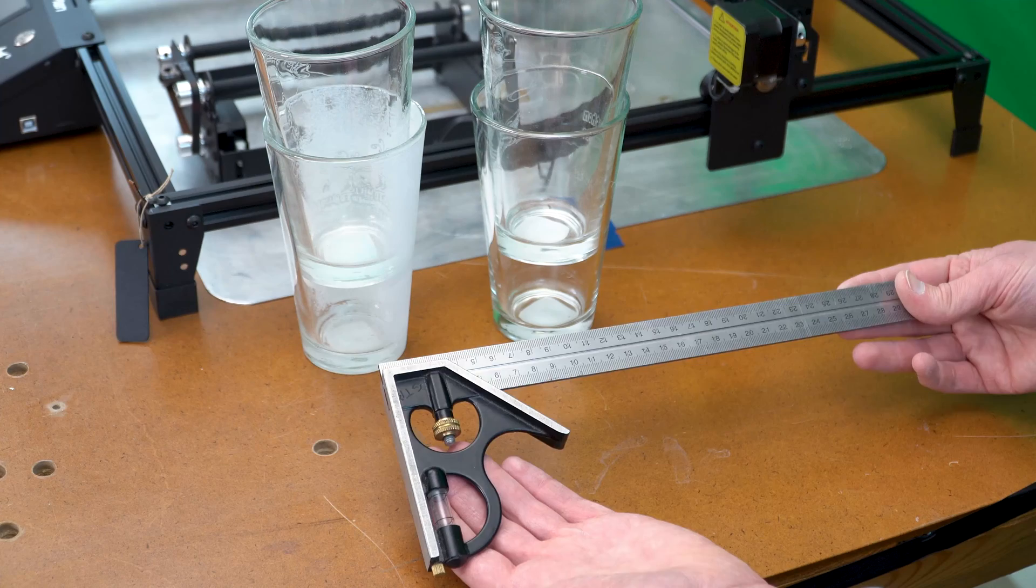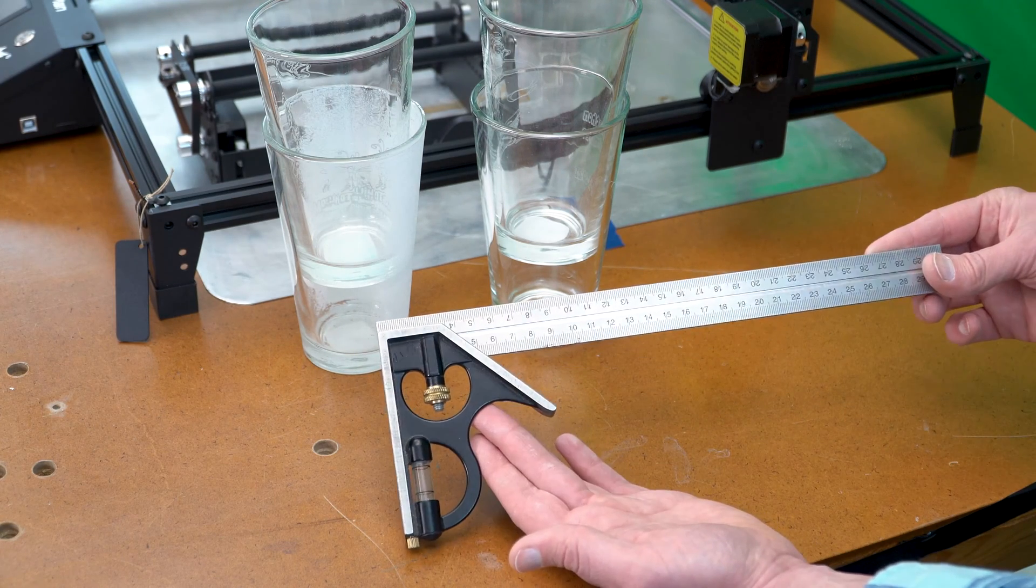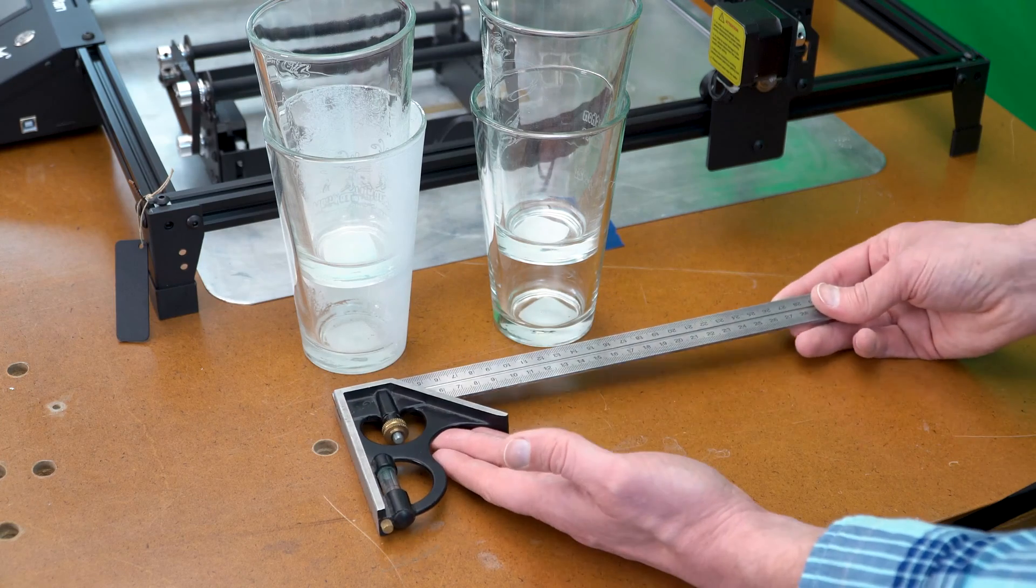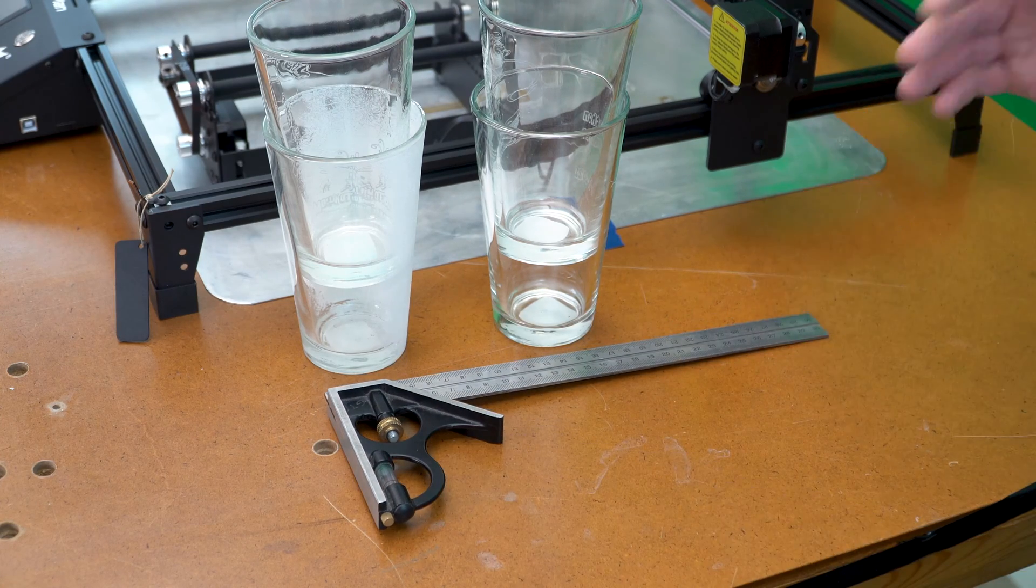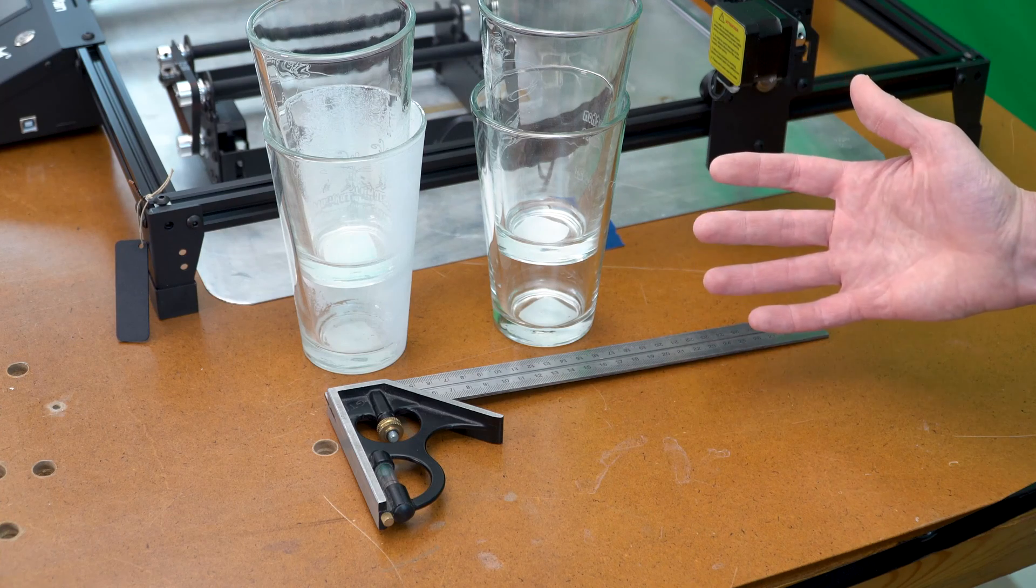I'll also be using a square. I can use a carpenter square, a plastic square. I have this metal engineering square that I'm going to use to make sure that the rotary attachment is aligned properly to the laser machine.